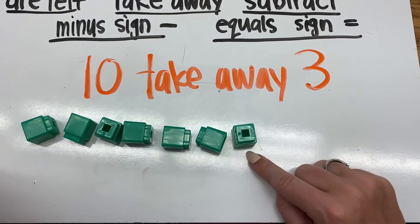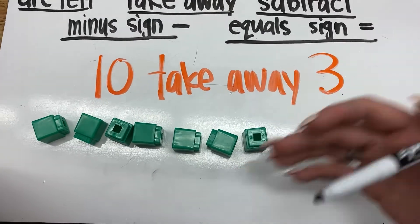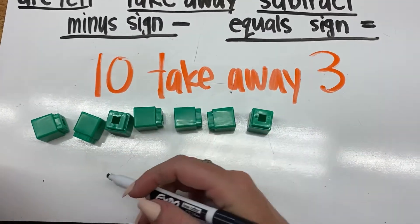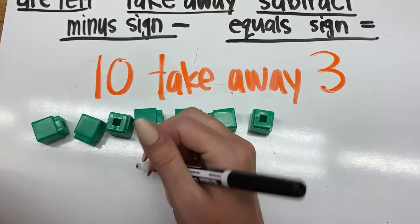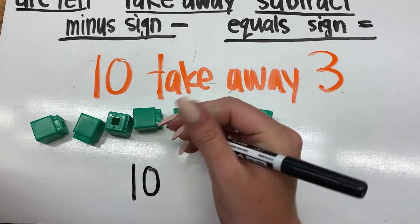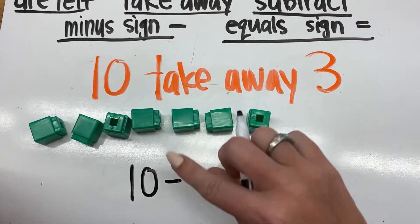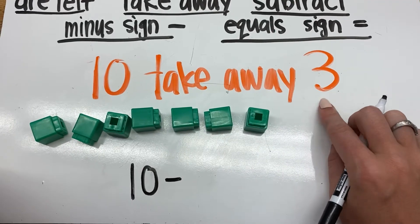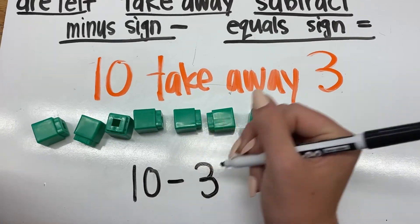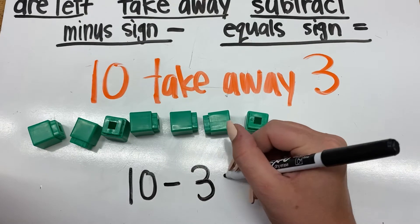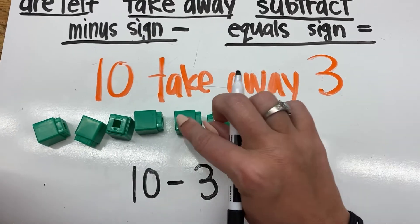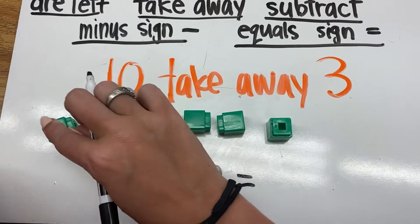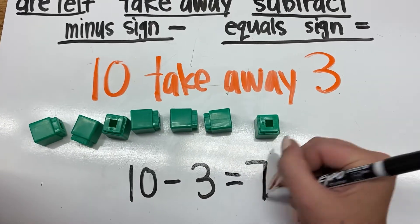So I've got seven left right here. So let's go down here, and let's write that subtraction sentence. So how many did I start off with? Ten, minus or take away. How many did I take away? Three, and then how many are left equals? One, two, three, four, five, six, seven. Excellent.